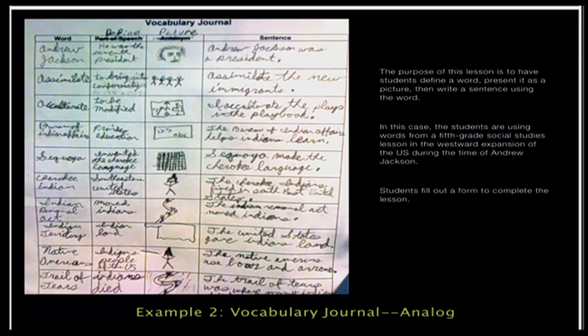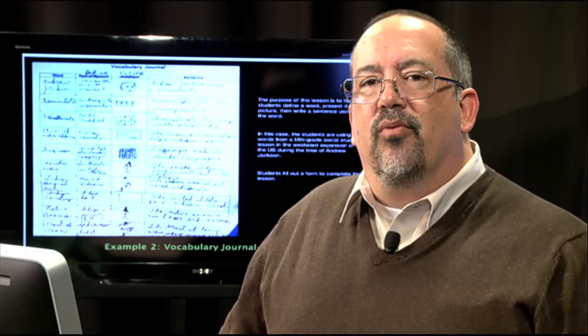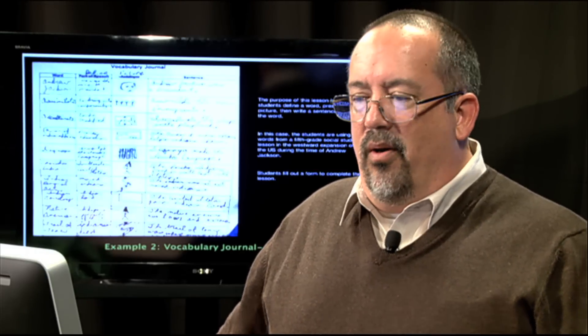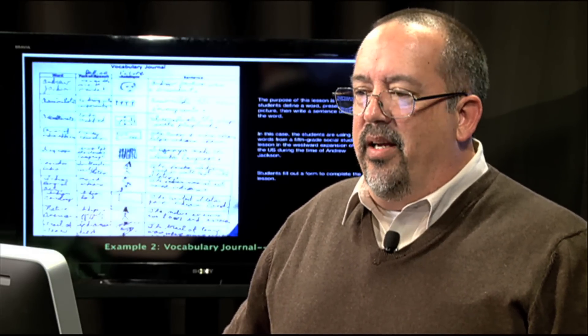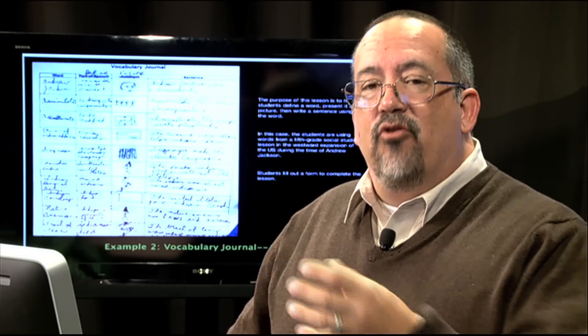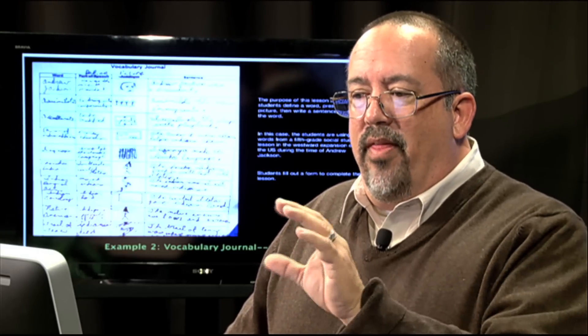Let's look at this one. This was a vocabulary journal that a student had to do, and on the left-hand side, the student had to fill in some information. In this case, they had a name or a word that they had to define. At the very top there, they had Andrew Jackson. It was the word, for instance, or assimilate, or Bureau of Indian Affairs, or Sequoia. These were obviously a unit that the teacher was studying on maybe the Indian Wars or a specific time in American history. They had to define those words. Then, they had to draw a picture of what that word meant.